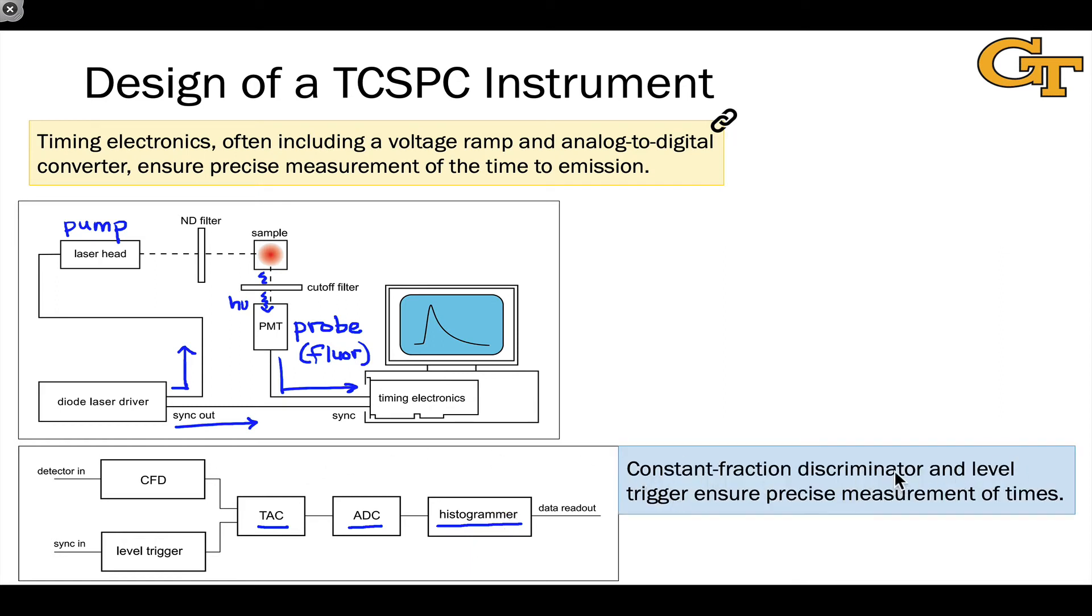To ensure the precise measurement of times, we make use of this constant fraction discriminator or CFD and the level trigger. And the idea here is that the PMT will give somewhat different responses for each photon that hits because of slight variations in how the fluorescence process takes place and how the photomultiplier tube detects a photon impinging on it. And so we essentially use a cutoff level to detect that a photon has been emitted in the case of the CFD. And in the case of the level trigger, that an excitation photon has been sent to the sample via the laser. When that level trigger hits, that's our start symbol, our indicator to start the stopwatch. And when the CFD hits, that's our stop signal. Since the photomultiplier tube is now giving us a signal and CFD tells us, yes, that's a real signal, stop your stopwatch.